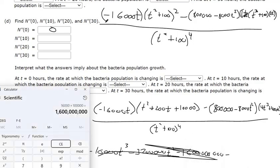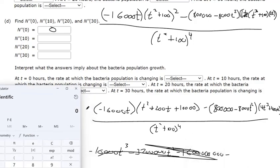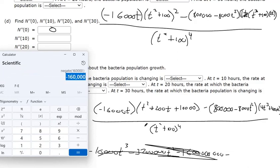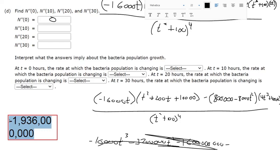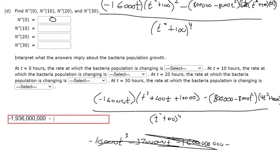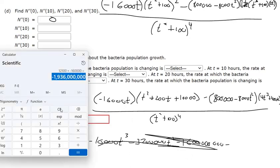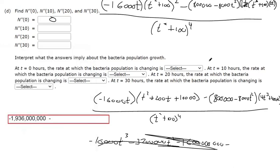And then if I plug in 10, this one will be a little harder to keep track of. So we've got 16,000 times 10 is negative. Keep that in mind. So 10 squared plus 2000 plus 10,000 times that. So we've got negative 1,936,000,000. That's the first term in the numerator. And then over here, if I plug in 10, 10 squared times 8000. Oh, this is going to be 0. So this 0 times whatever this is going to be 0. So that's a 0 there.